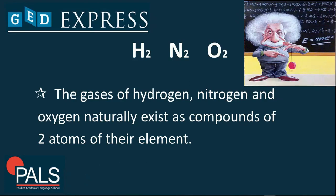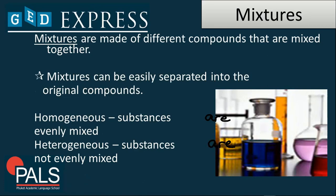These are also known as diatomic, like H2, N2, and O2. Mixtures are generally made of different compounds that are mixed together, and they can be easily separated into their original compounds by different separation processes. Homogeneous mixtures are substances that are evenly mixed, and heterogeneous mixtures are substances that are not evenly mixed.